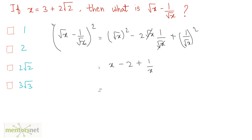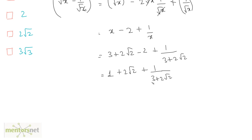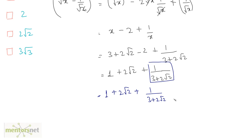Now I can put the value of x here. So x is 3 plus 2 root 2, giving 3 plus 2 root 2 minus 2 plus 1 by 3 plus 2 root 2. This simplifies to 1 plus 2 root 2 plus 1 by (3 plus 2 root 2). To get rid of the denominator 3 plus 2 root 2, I multiply both numerator and denominator by the conjugate 3 minus 2 root 2.